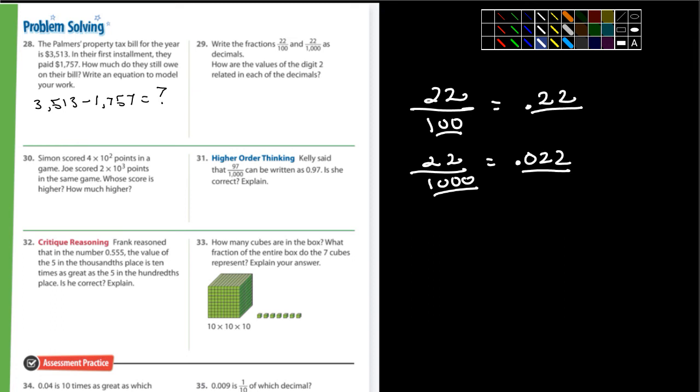And how are the, it asks the question then. And I can go ahead and write this down here. 0.22 and 0.022. And how are the two digits related in each of the decimals? How are they related? Well,